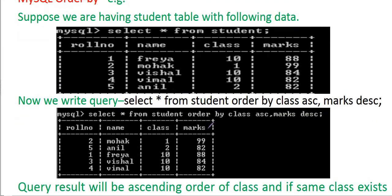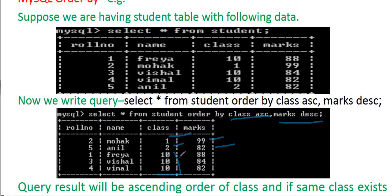Now: ORDER BY class ASC, marks DESC — class in ascending order but marks in descending order within each class. So first class 1 (ascending), then class 2, then class 10 with marks in descending order: 88, 84, 84, 82.